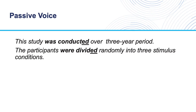Let's look at the example of passive voice in more detail. What you see on the screen are some examples of the passive voice from published research articles, such as: 'This study was conducted over a three-year period,' and 'The participants were divided randomly into three stimulus conditions.' Grammatically, passive voice is constructed with the verb to be followed by the participle form of the verb. The -ed suffix is added to each verb to make the past participle because these verbs are regular. In the next video, we'll look at how I teach the passive.